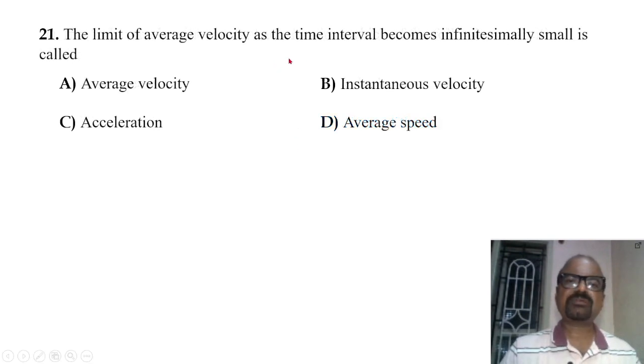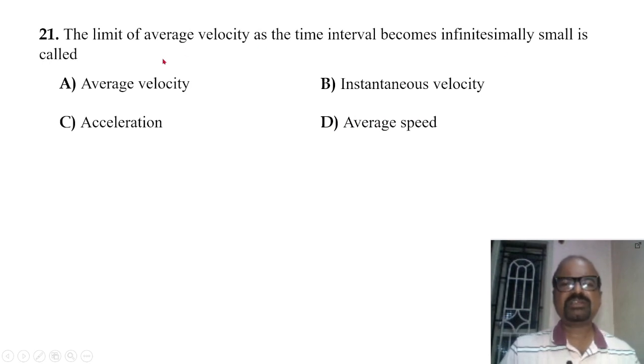The limit of average velocity as the time interval becomes increasingly small — this is the definition of instantaneous velocity.